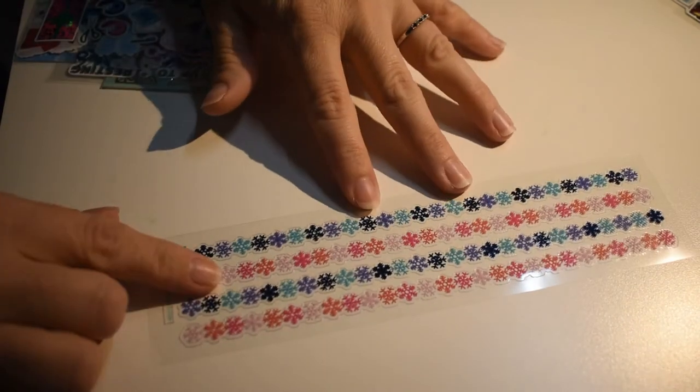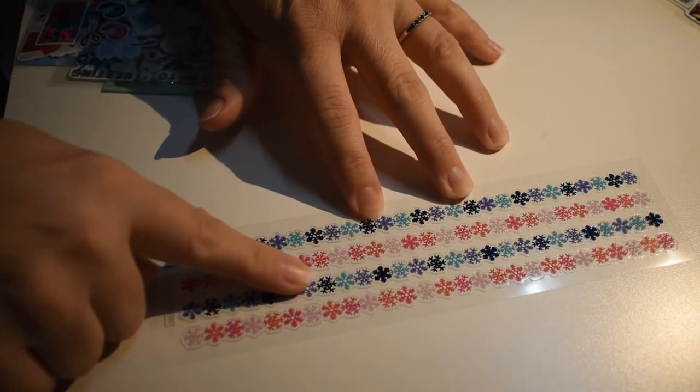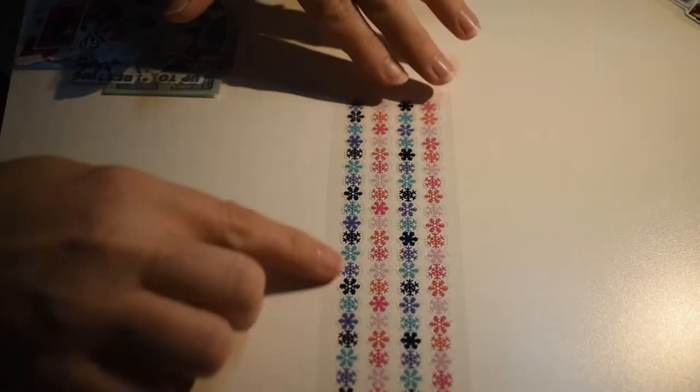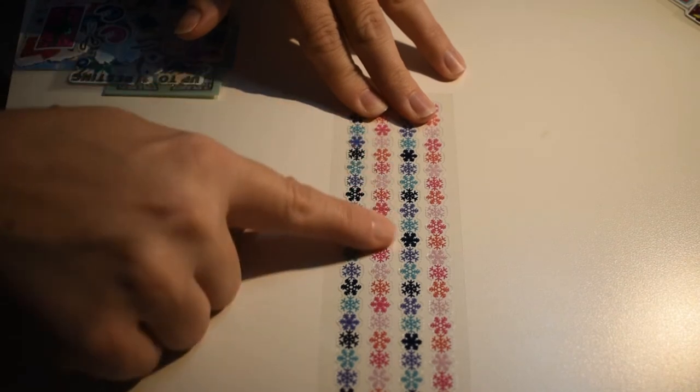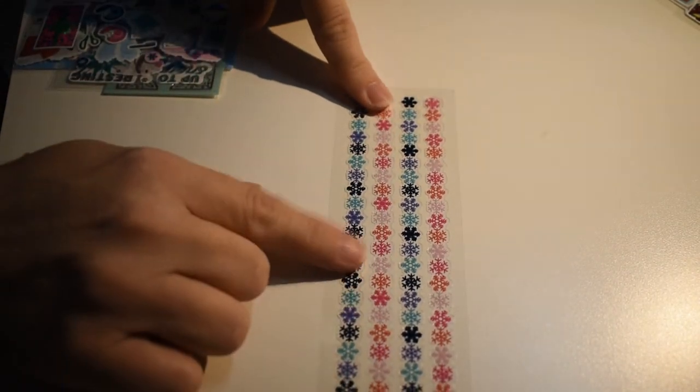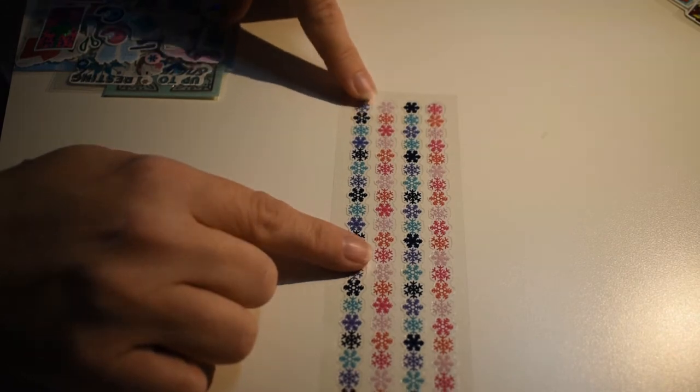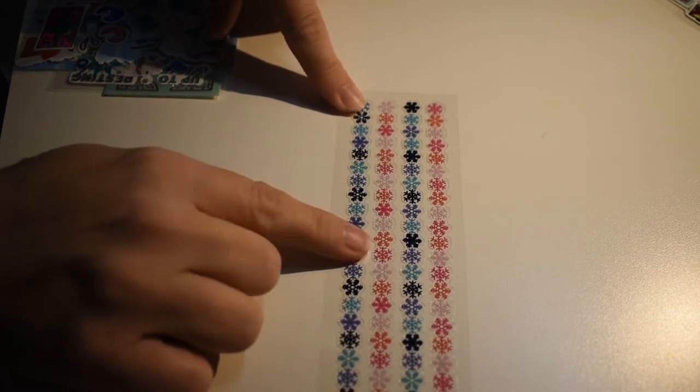Alright, here's some long border stickers. Great for planners. Great for lining your journal pages. Very long, pretty snowflakes. These are good in January, too, because it's not completely holiday. There's winter weather in January.